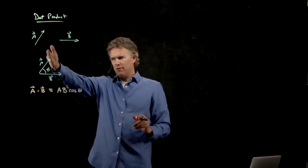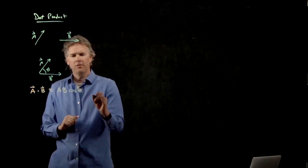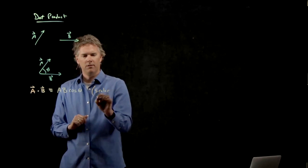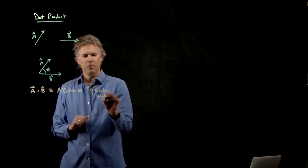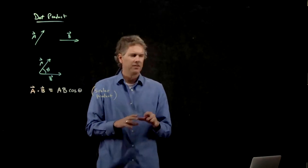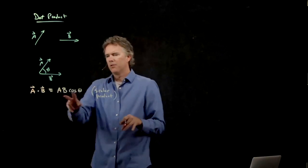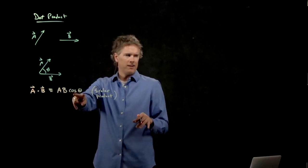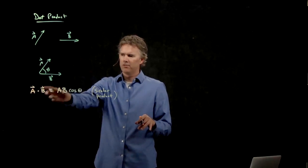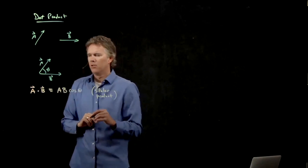This is a scalar. So this is known as the scalar product. If you hear those words, it's the same thing as dot product. Because there's no vectors on the right-hand side here. You took two vectors and got rid of the vector signs by writing it as this scalar product.